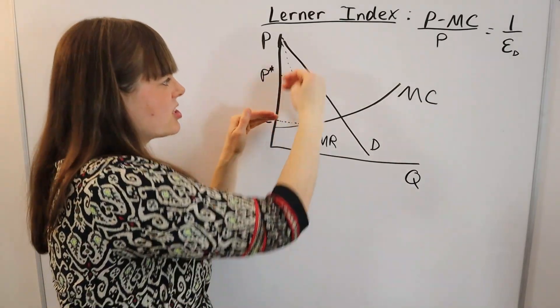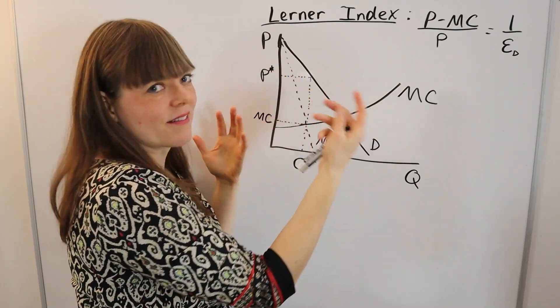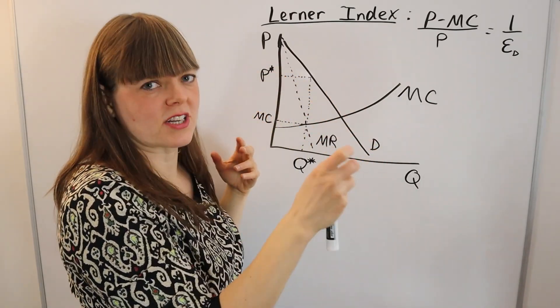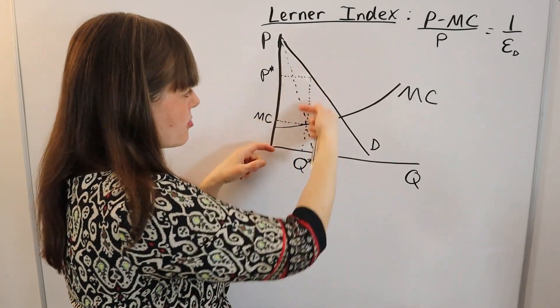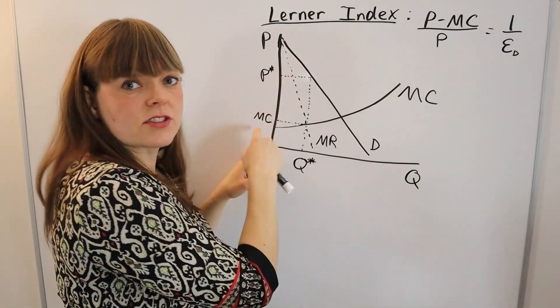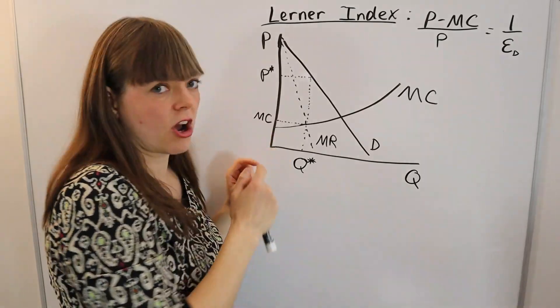How much is the company marking up price above what they're paying at the margin for that thing? In this case, it looks like about two-thirds of the price you're paying is over and above marginal cost.